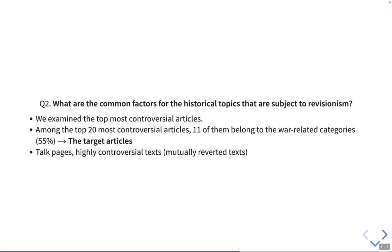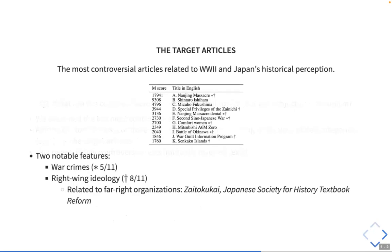Then, what are the common factors for these articles? To answer this question, we examined the most controversial articles that belong to the war-related categories. We selected them as our target articles and examined their talk pages and most contentious texts. We found two notable features: war crimes and right-wing ideology. Five of them are related to war crimes, and the reverted edits in these articles are related to claims made by far-right organizations.